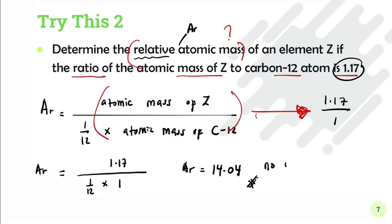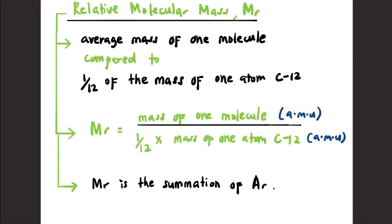Now let's talk about relative molecular mass, or Mr. Mr is the average mass of one molecule compared to 1/12 of the mass of one atom of carbon-12. So the formula is: Mr equals mass of one molecule in amu divided by 1/12 times mass of one atom of carbon-12 in amu.